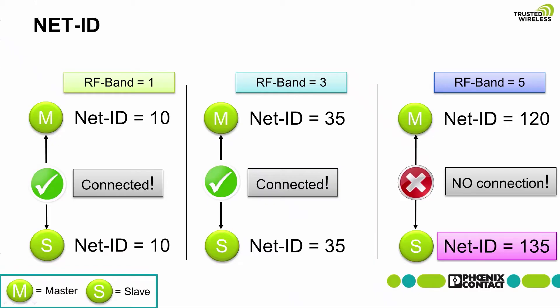The net ID defines which wireless modules can communicate with each other. Different net IDs use different hopping sequences based on a proprietary frequency hopping spread spectrum method.